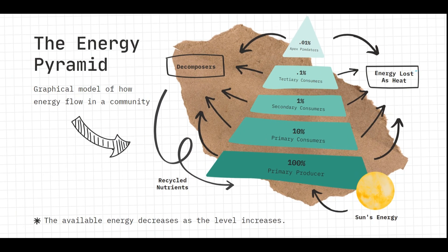The energy pyramid is a graphical model or representation of how energy flows in a community. The primary source of energy is the sun. The sun transfers its energy to the producers, and the producers use the energy from the sun to produce food through photosynthesis.